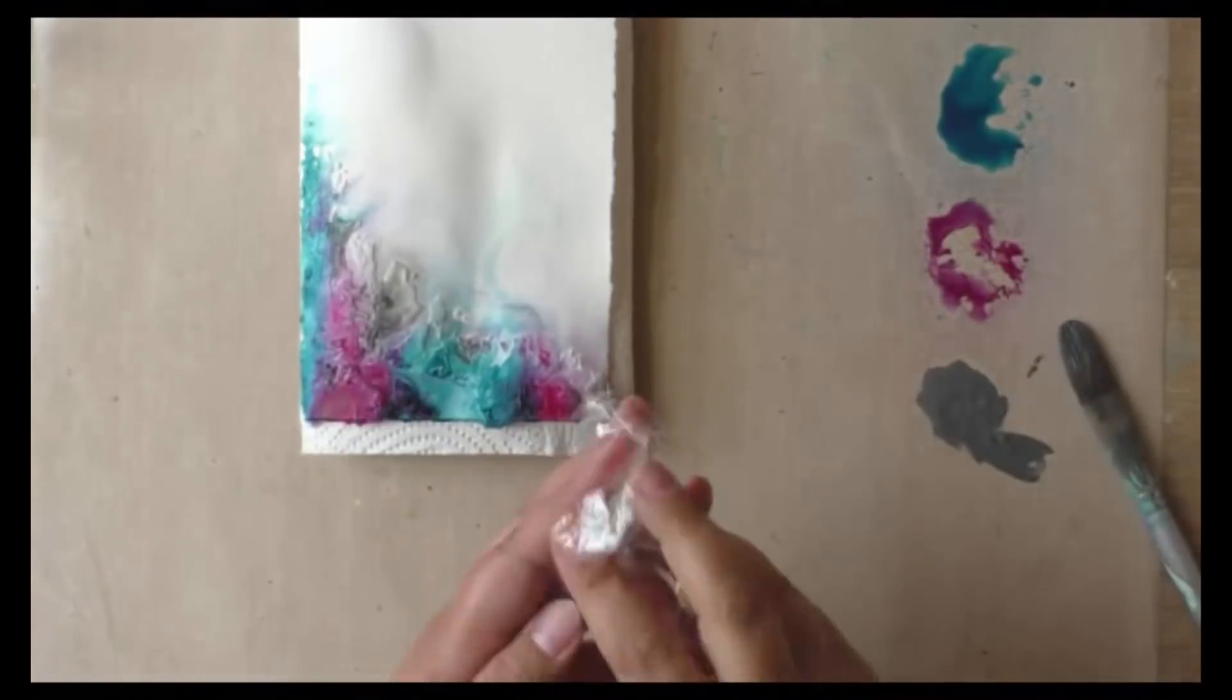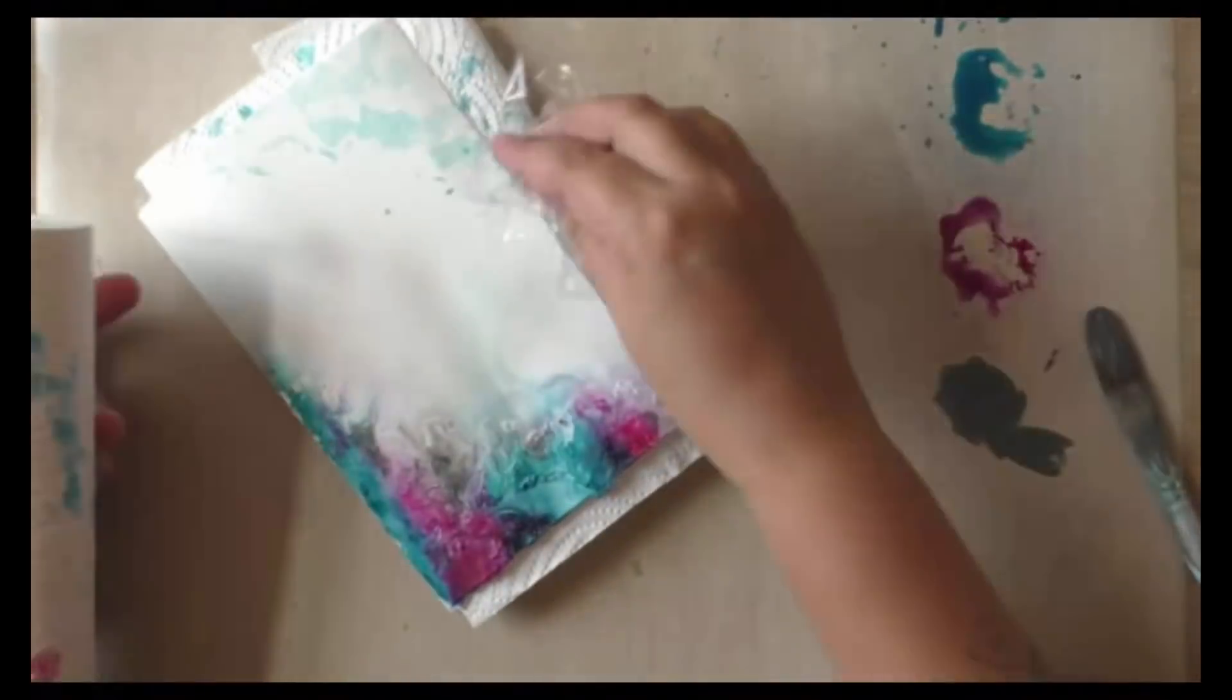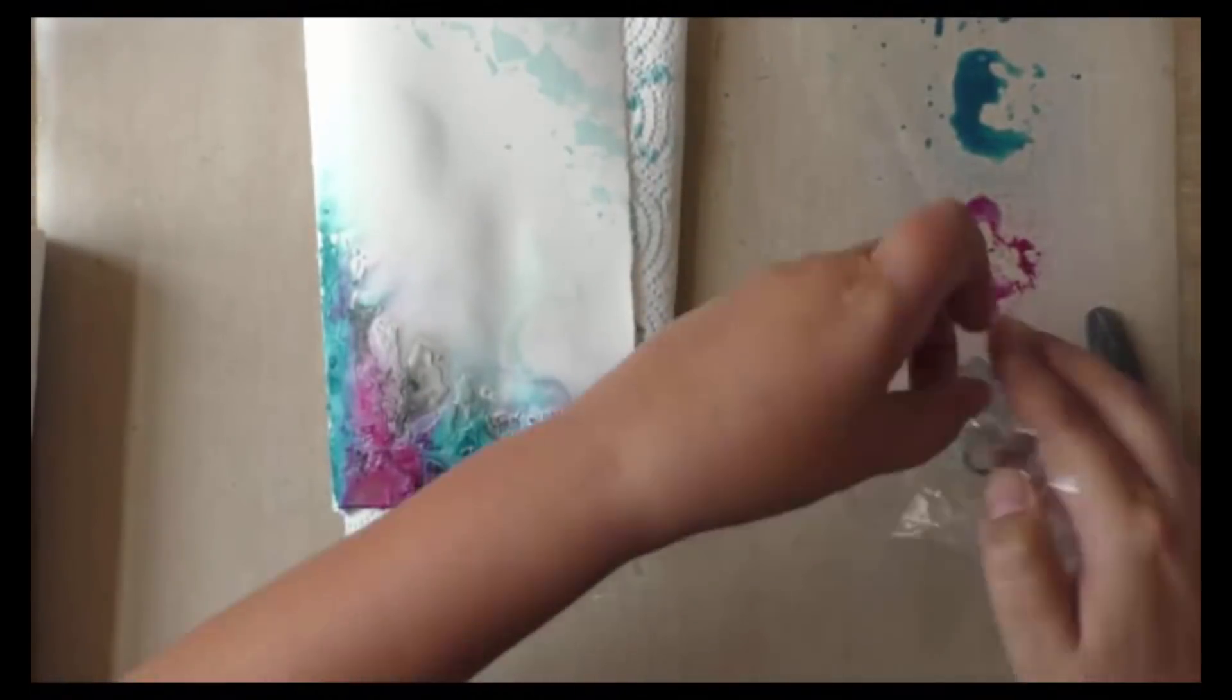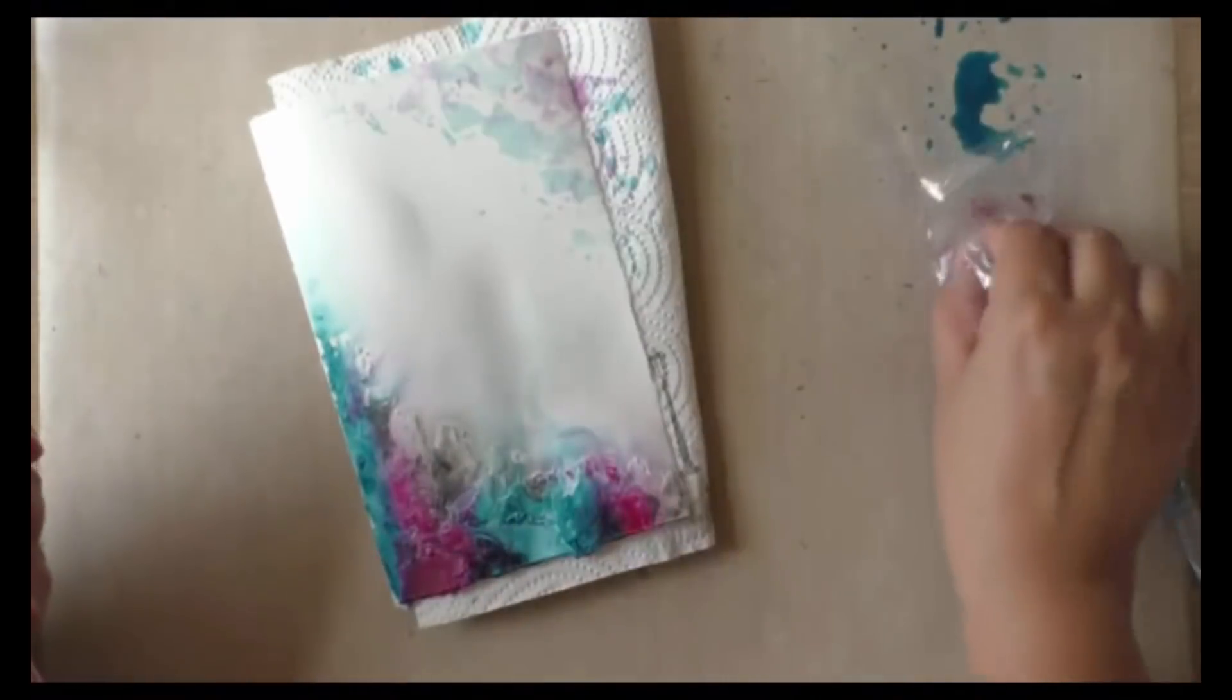As I still have some of that diluted color on my table, I'm taking this packaging wrap and I'm using it to dab on some more of the color, just to add some hints of color at the top of the page as well.